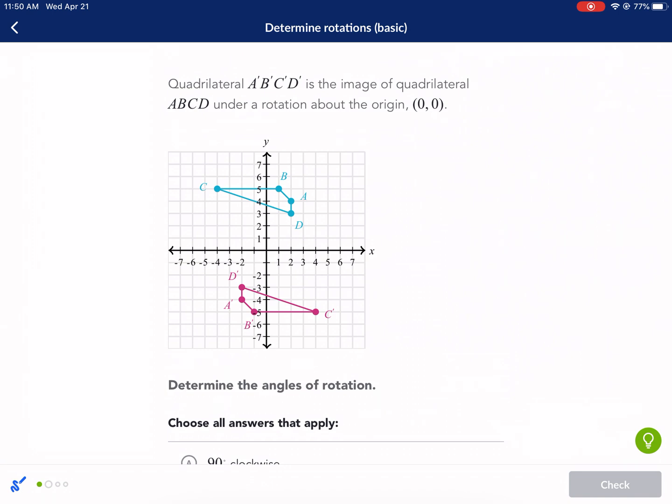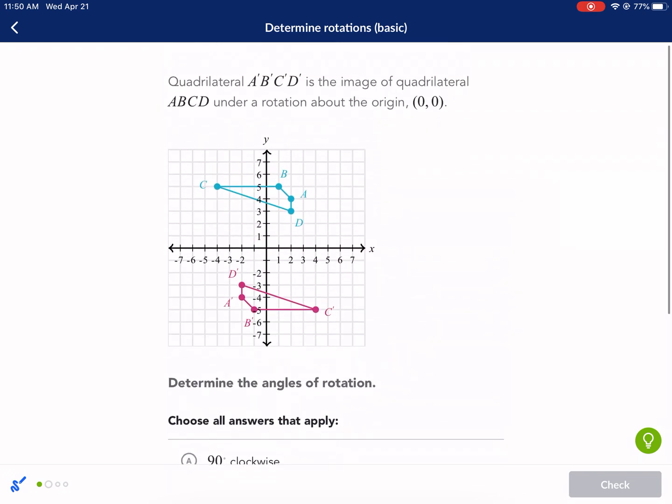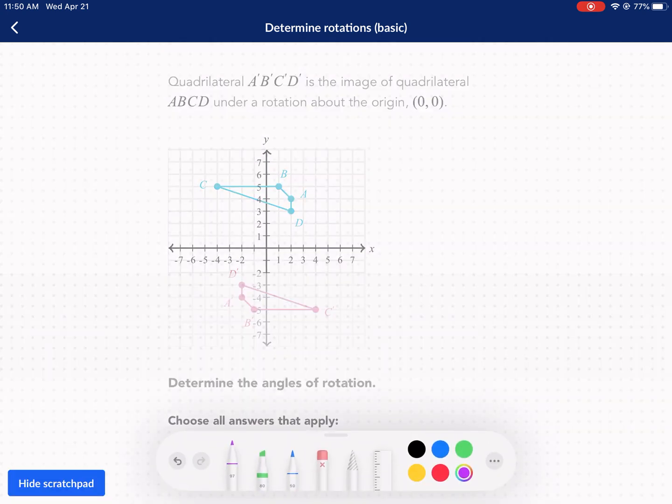Quadrilateral ABCD prime is the image of a quadrilateral under rotation about the origin. Determine the angles of rotation. Now this one is, again, we can draw the center point. That's usually a good spot to start.